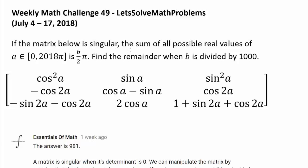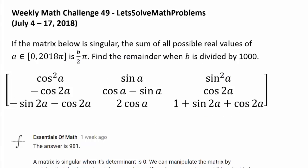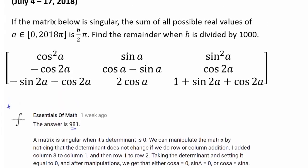If the matrix below is singular, the sum of all possible real values of A belonging to the closed interval from 0 to 2018π is b over 2π. Find the remainder when b is divided by 1000. We have this pretty scary-looking matrix full of trigonometric expressions. Before we simplify the determinant, I want to recognize Essentials of Math for being the very first person to correctly answer last week's challenge with the answer of 981. Let's see if we can get the same answer by the end of this video.